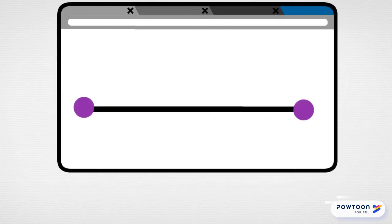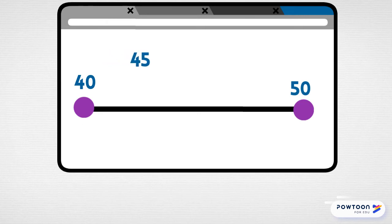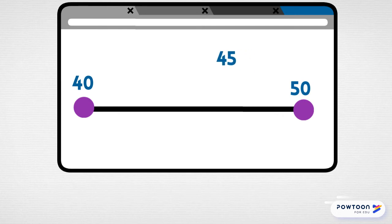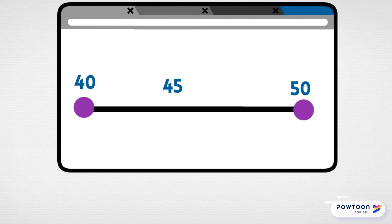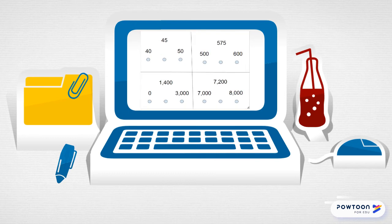Here's our number line that starts at 40 and ends at 50. I need to figure out where 45 belongs on this number line, so I think of the numbers that come between 40 and 50: 41, 42, 43, 44, then 45, then 46, 47, 48, 49. There's the same amount of numbers on both sides — four numbers before 45 and four numbers after 45 — which means that 45 is right in the middle. We figured it out with the number line. I know that 45 is right in the middle, so that's where I'm putting my dot, right in the middle circle.